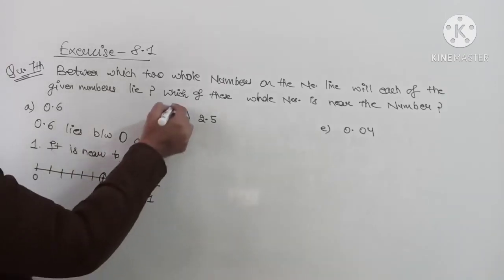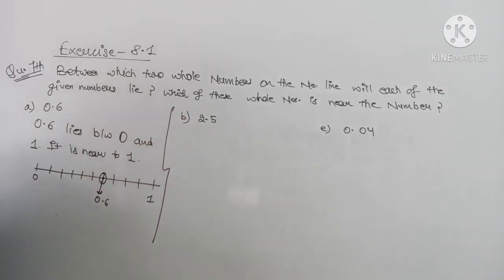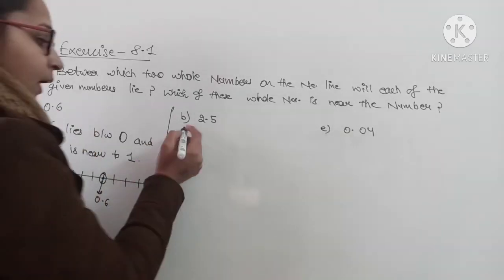A part done, now comes B part. B part is 2.5, 2 point something. It means it is greater than 2 and it will be less than 3, so it will lie between 2 and 3.